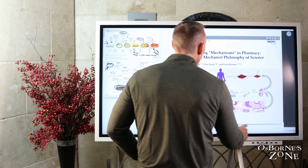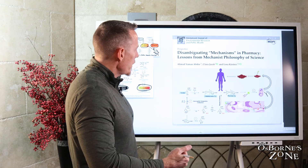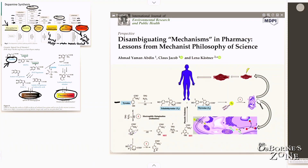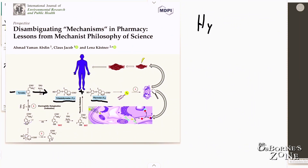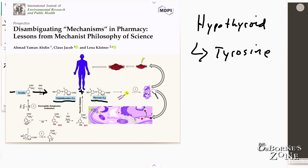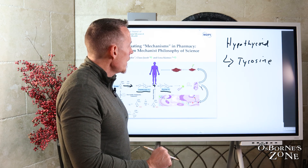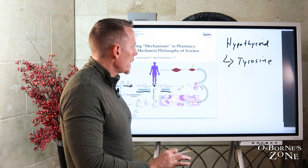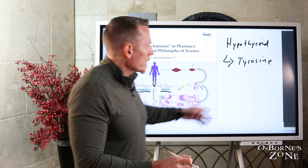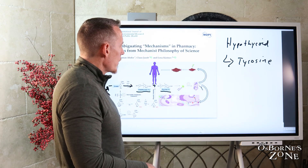Tyrosine also plays a role in thyroid hormone production. In this diagram, you can see tyrosine chemically converting into T3 — triiodothyronine — and then from T3 we make T4, thyroxine. For those with hypothyroid illness, it's interesting how few doctors ever measure tyrosine to determine whether it's a cause or contributing factor in low thyroid. In 24 years of practice, I've never seen a patient come from their endocrinologist where tyrosine was measured to identify why their thyroid wasn't working properly.